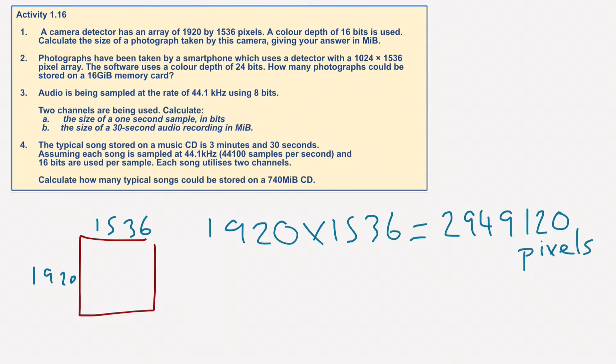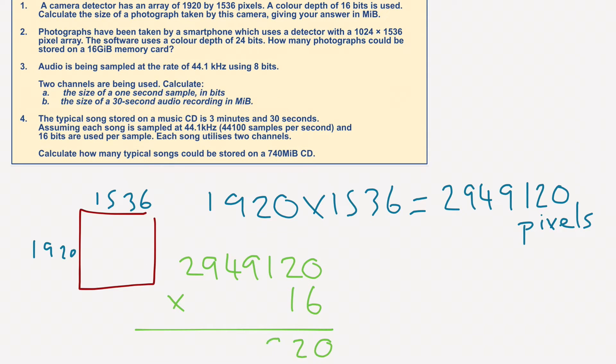So we've got all these pixels. 2,949,120 pixels and we've got to multiply that by 16. Lots of multiplications, lots of absolutely massive numbers. So we're going to multiply the area by the color depth, which gives us 47,185,920 bits. So we've moved this into bits.